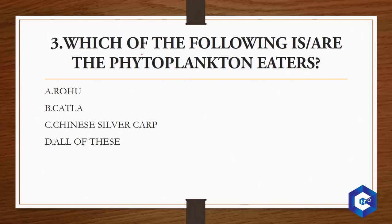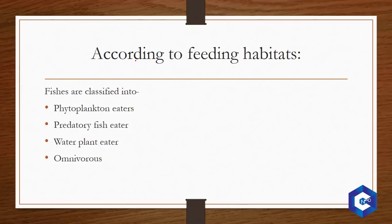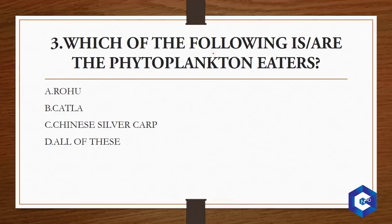Which of the following are the phytoplankton eaters? In fisheries, fishes are classified according to their feeding habitat. Phytoplankton eaters are generally Rohu and Katla. Predatory fish eaters are the snakehead species. Water plant eaters are Chinese grass carp and Tilapia. Omnivorous class comprises catfish, Mrigal, and Tilapia. The answer to this question — the phytoplankton eaters — will be Rohu, Katla, Chinese silver carp, and all of these. The answer is option D.